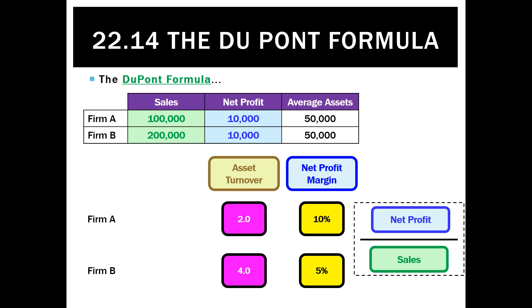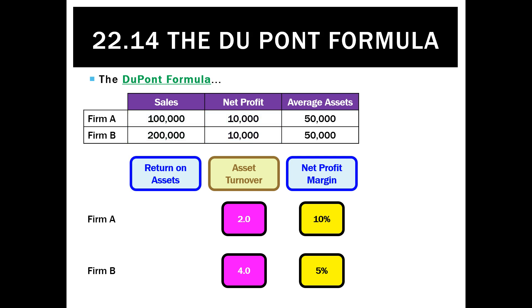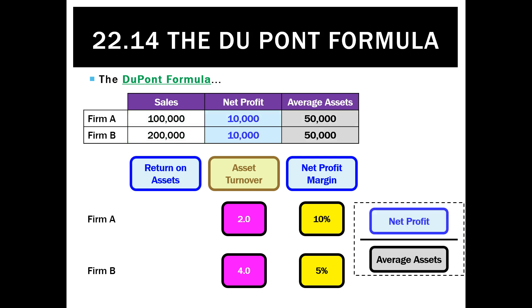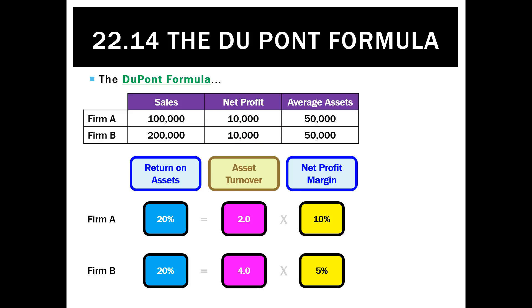To prove that the DuPont formula works, we calculate return on assets — net profit divided by average assets. For Firm A: 10,000 divided by 50,000 is 20%, and for Firm B: 10,000 divided by 50,000 is also 20%. It's worked out identical, and that's because of the DuPont formula. These businesses are equally successful in providing a return on assets.